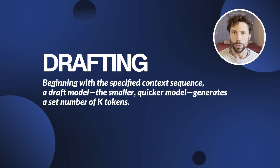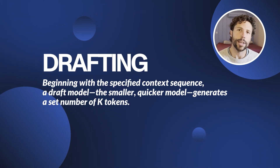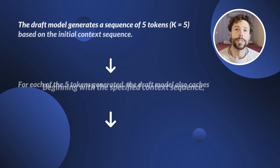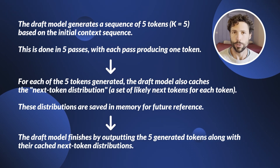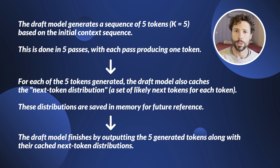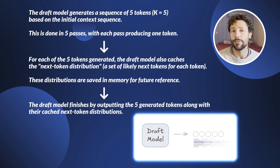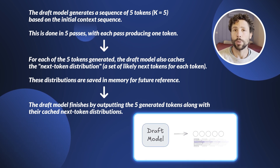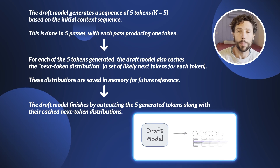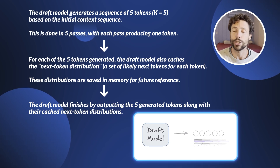Let's see how speculative sampling comes as a really smart solution to this problem. Effectively, it redesigns the token generation loop and splits it into three separate steps. In step 1, a draft model — the smaller, faster model — generates a fixed number of k tokens starting from the given context sequence. For illustration, let's stick to k equals 5, which turns out to be the optimal value in the experiments. This requires 5 passes from this model. Note that on top of the 5 selected tokens, the corresponding 5 next-token probability distributions from the model are also cached in memory.